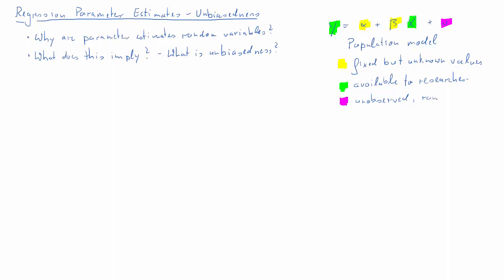I assume you know how we use a sample to obtain an estimate for beta — we call that beta hat. The formula is the covariance of y and x divided by the variance of x, but we use our sample information for that. To indicate the covariance and variance come from a sample, I put the hats on here.